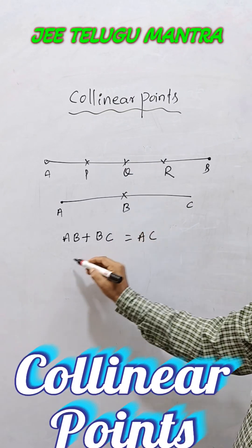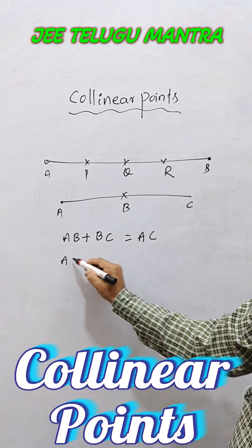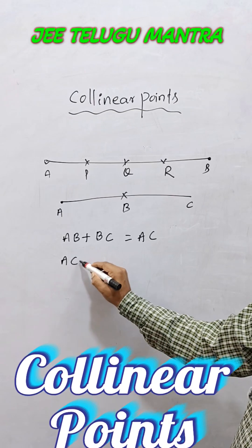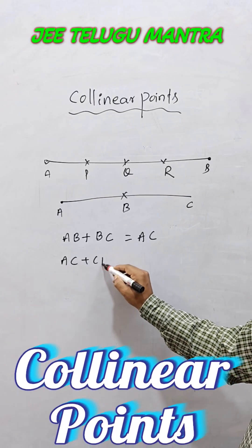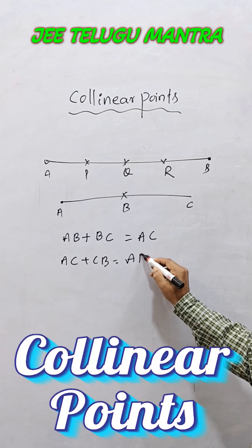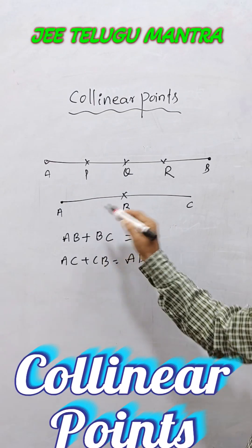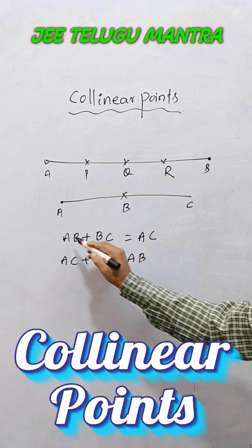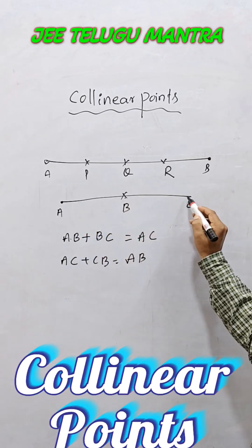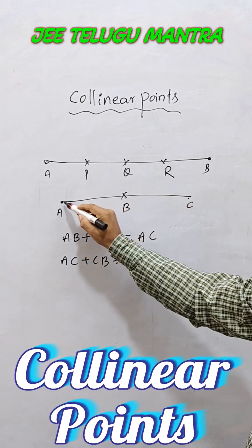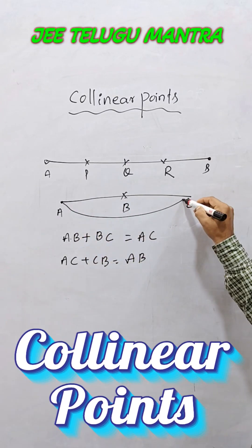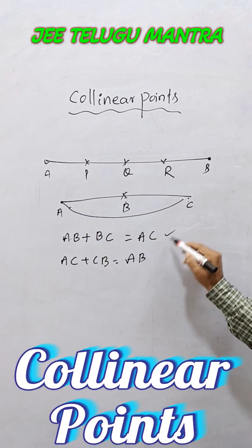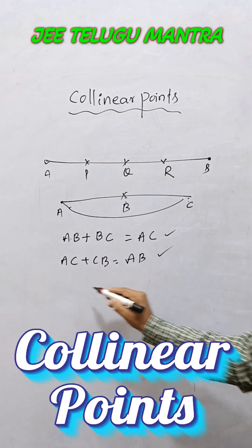Like that here, C is the point on AB. Now AC plus CB is equal to AB. If we change the position of the point, the sum of the two line segments is equal to the big line segment, then A, B, C are collinear points.